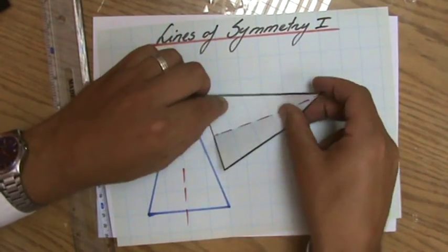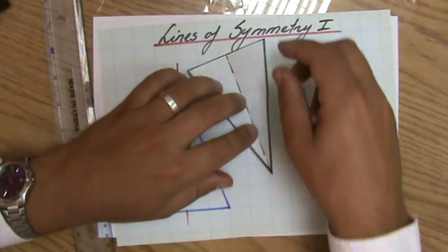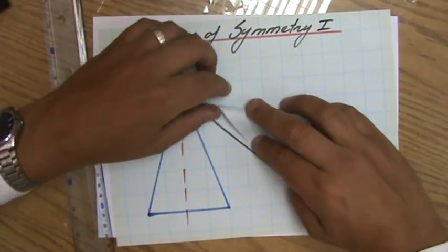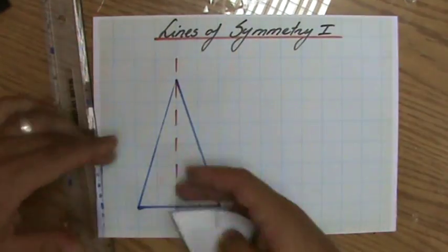There isn't any other mirror line, because however I fold it, it will never be exactly on top of each other, so there are no other lines of symmetry. Just one here.